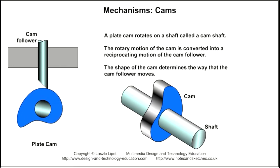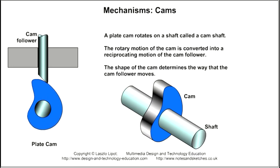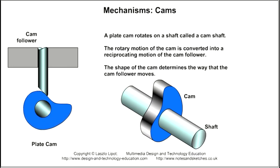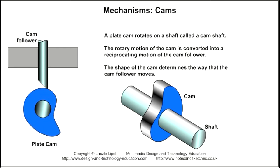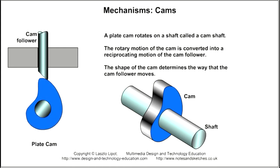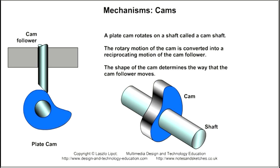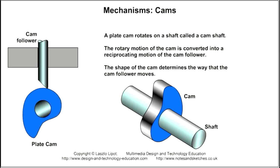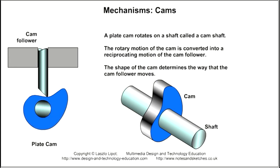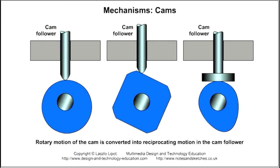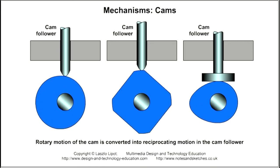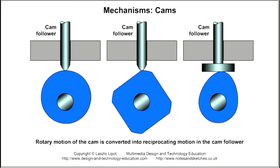The plate or disc cam consists of a metal plate fixed to a shaft called a camshaft. As the camshaft rotates, the cam moves a cam follower with either a reciprocating or an oscillating motion. The shape of the cam determines how the cam follower moves.